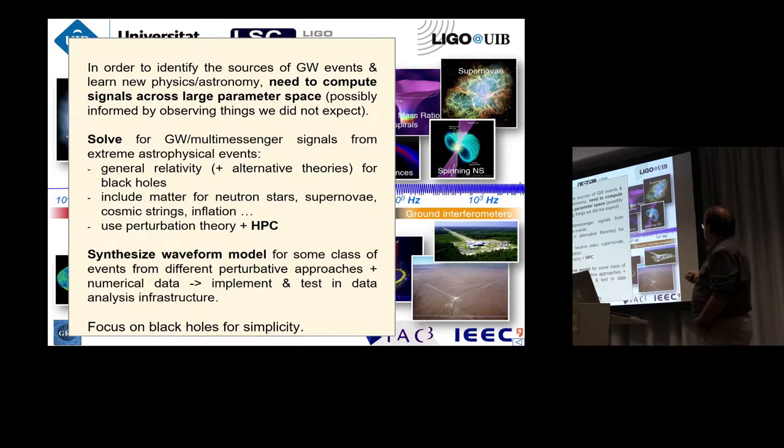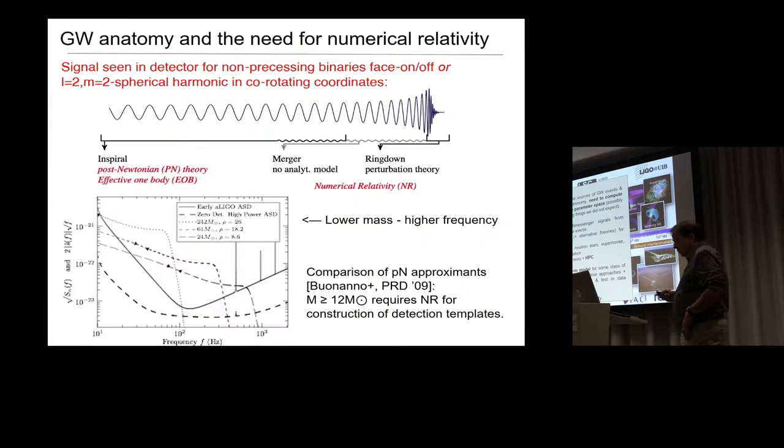In particular, general relativity. You could also do alternative theories of gravity, for example, for black holes. And if you don't have black holes, but you have neutron stars, supernovae, or other things, then we have to include matter effects as well. In general, the approach one is doing is you can use some different types of perturbation theory, which would give you results if the objects are very far away from each other. But then when they're very close, in the most violent phase of these events, you need to use high-performance computing to solve your underlying equation.